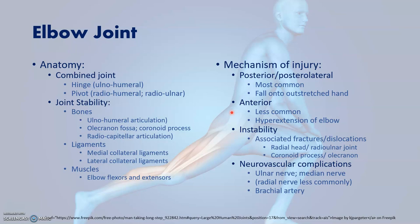The elbow joint is a combined hinge and pivot joint. The articulation between the trochlea and the olecranon fossa forms the hinge, whereas the articulation between the radial head and the capitellum forms the pivot. The hinge joint is responsible for flexion and extension, while the pivot joint is responsible for supination and pronation. Much of the stability of the elbow is due to the bony structure — the deep olecranon fossa holds the trochlea quite snugly, further reinforced by the coronoid process anteriorly, which reduces the risk of the trochlea moving out of the olecranon fossa. Lateral movement is somewhat stabilized by the radiocapitellar articulation.